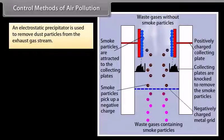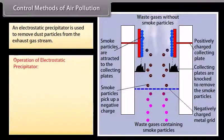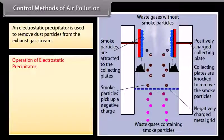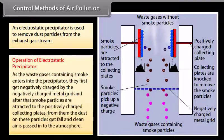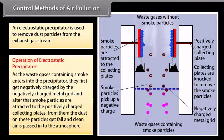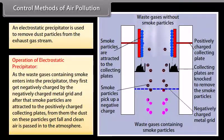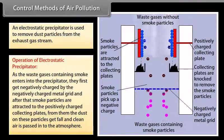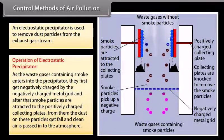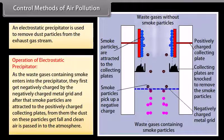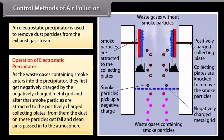Control methods of air pollution. An electrostatic precipitator is used to remove dust particles from the exhaust gas stream. As the waste gases containing smoke enter the precipitator, they first get negatively charged by the negatively charged metal grid, and after that smoke particles are attracted to the positively charged collecting plates. From them, the dust on these particles falls and clean air is passed into the atmosphere.